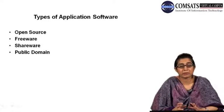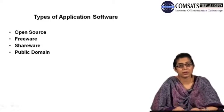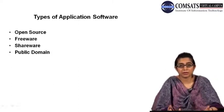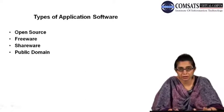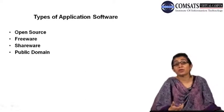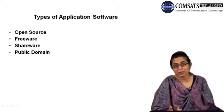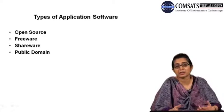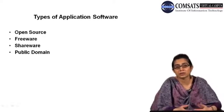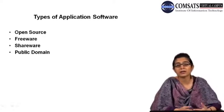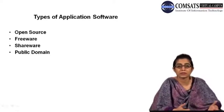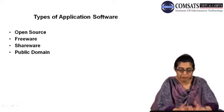Types of application software: when we were talking about off-the-shelf software, we said there are certain kinds of software available online that you can download and make some changes to. That kind of software is open source software. Open source software means that a modifiable version of the source code is actually available online. Software developers can download it and make changes according to their needs or according to the organization's needs.